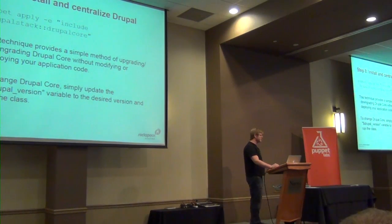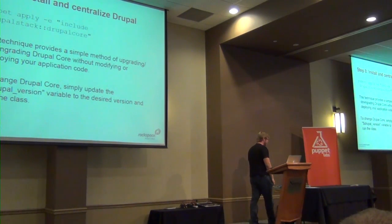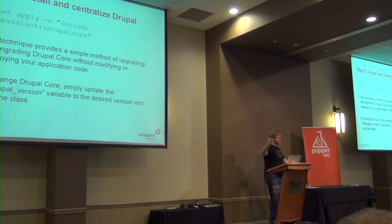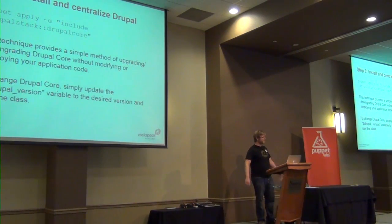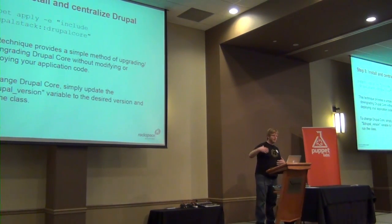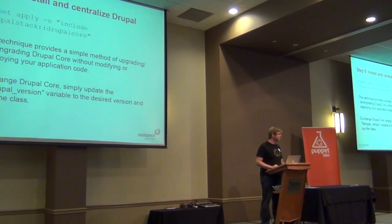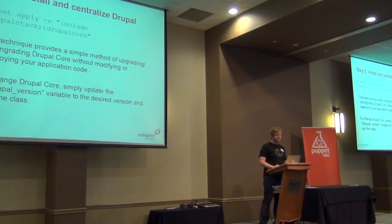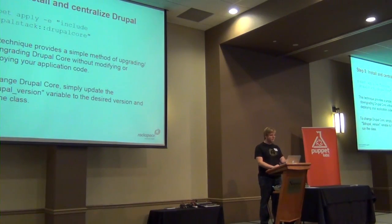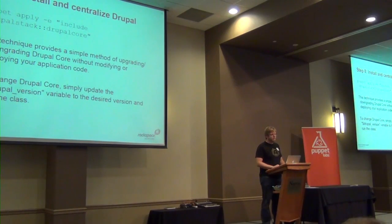Next is installing Drupal core. I use a simple technique in this approach. I install it to /opt, I create a symlink to the most recent version that's downloaded, and the application simply references it via the include path inside the Apache virtual host. It's on my GitHub repo — please check it out. It's installed in a central location, sets up the symlink. It's an example of a simple variable usage — a Drupal version variable — so they can change that at any time and run the update.